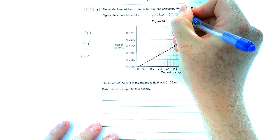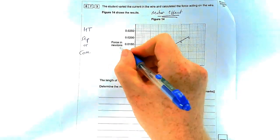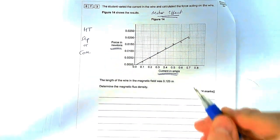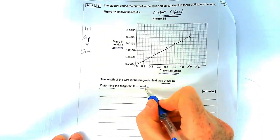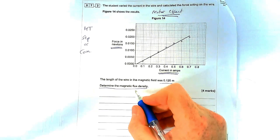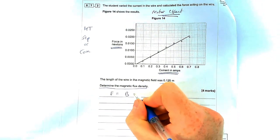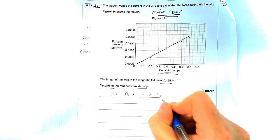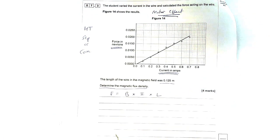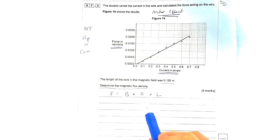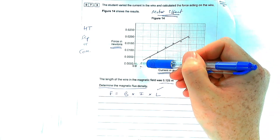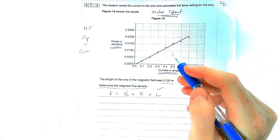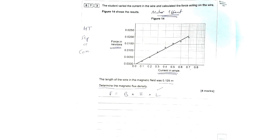For this part of the question, we're looking at the calculation aspect involving the graph, which shows how force in Newtons varies with current applied. There's only one equation with magnetic flux density in it, so that's the first thing we write down. Often with these questions we're given three values and find a third, but here we've got the length of the wire, but many different values for current and force. So we're going to have to use all of them — we're going to use the line of best fit.